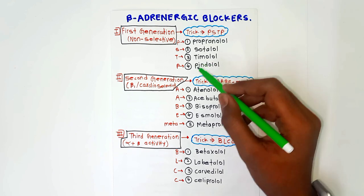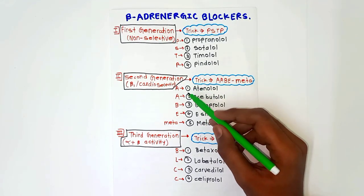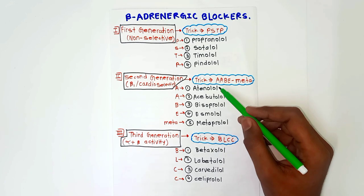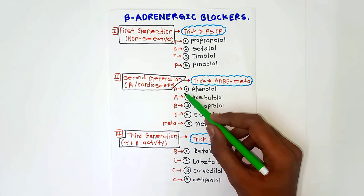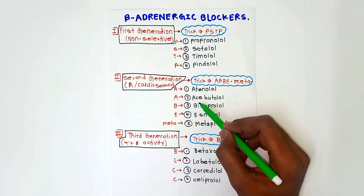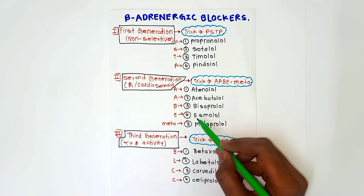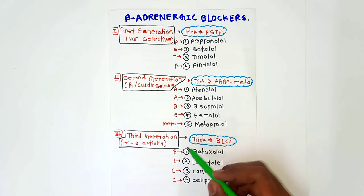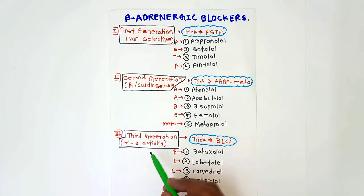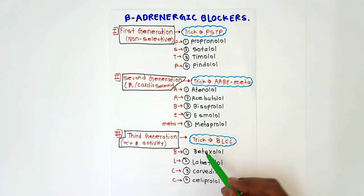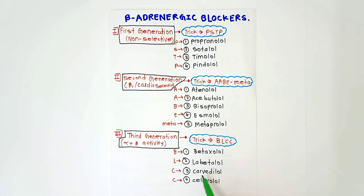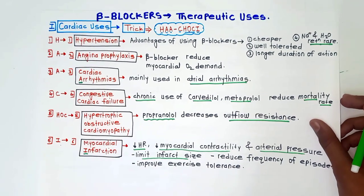For second generation, that is beta-1 or cardio-selective beta blockers, the trick to remember is ABEMETA — A for atenolol, A for acebutolol, B for bisoprolol, E for esmolol, and META for metoprolol. For third generation beta blockers, which have alpha plus beta activity, the trick is BLCC — B for betaxolol, L for labetalol, C for carvedilol, and C for celiprolol.